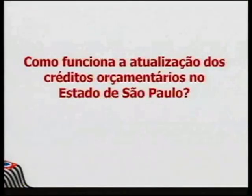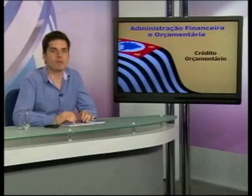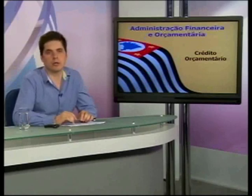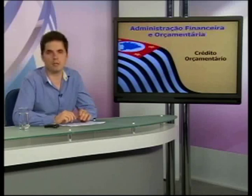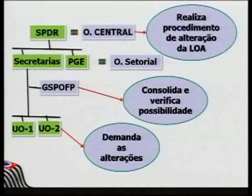Como funciona a atualização dos créditos orçamentários no Estado de São Paulo? Aqui no Estado temos a SPDR — Secretaria de Planejamento e Desenvolvimento Regional — como órgão central de planejamento. Ela realiza todo o procedimento de alteração da LOA, faz a verificação da necessidade de créditos adicionais e envia ao chefe do Poder Executivo todas essas necessidades, que vai promover a alteração da lei e inclusão de novos créditos durante o exercício.